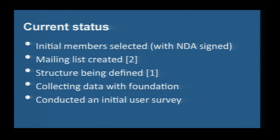The current status: we have the initial members — the three of us. We all have NDAs signed, so any information shared with us is private within the group. We don't share it outside the user committee at all. Survey information only comes to us and we provide only aggregate statistics. We've also created a mailing list — currently anyone can subscribe and read, but only committee members can post. We're looking at changing this to make the process more open so anyone can post.